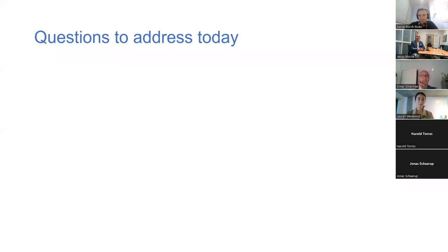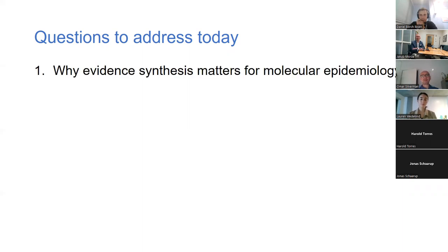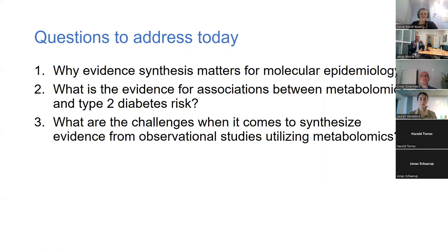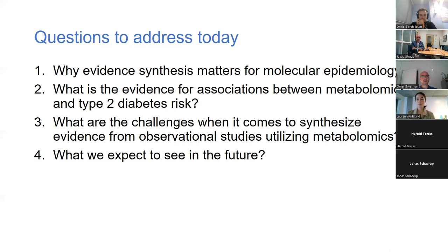A few questions I would like to address today. First, why does evidence synthesis matter for molecular epidemiology? Second, what is the actual evidence for associations between metabolites and type 2 diabetes? Third, what are the challenges when it comes to pooling evidence from observational studies? And the last one, probably the most interesting: what do we expect to see in the future?